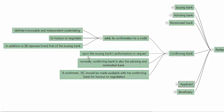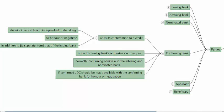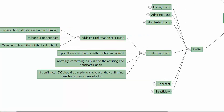A confirming bank adds its confirmation only upon the issuing bank's authorization or request. There is a concept called silent confirmation, where without the knowledge of the issuing bank, some banks add their confirmation — but that is an aberration. Normally, when there is a confirmation, the confirming bank is also the advising and nominated bank. So when an issuing bank nominates a bank to confirm the credit, it nominates the same bank for acceptance or deferred payment undertaking and also to advise the credit.